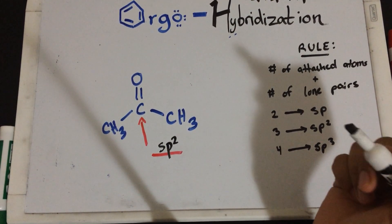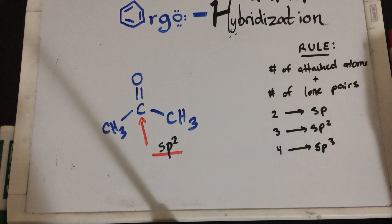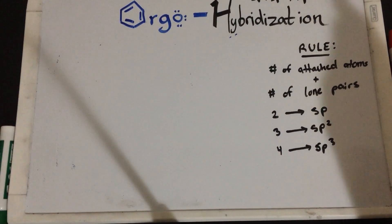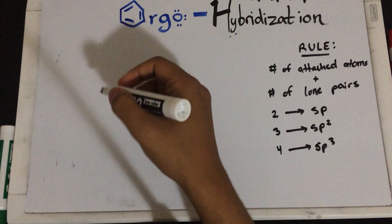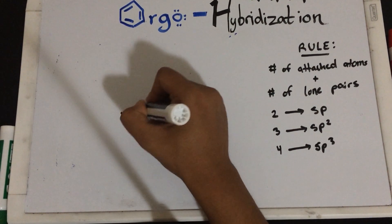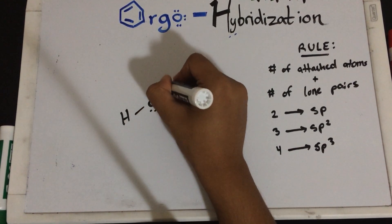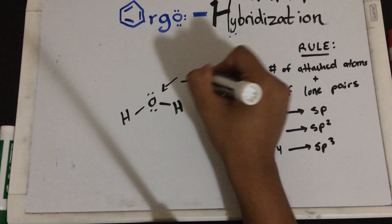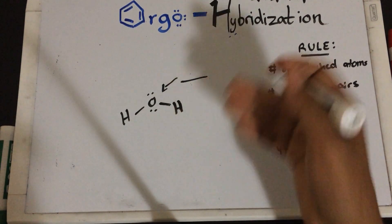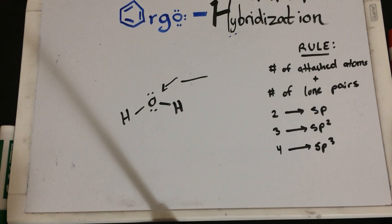Now, this is the simple rule. You just look at the number of attached atoms, number of lone pairs, and you'll be able to figure it out. So, now, just on your own, I'm going to leave this on your own, figure out what is the hybridization of this oxygen in water. I'll let you guys figure it out. And the answer, I'll put it in the description.